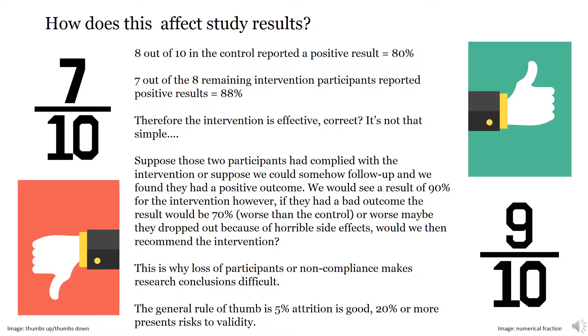The rule of thumb is 5% loss is good, and more than 20% loss of participants questions the validity of a study.